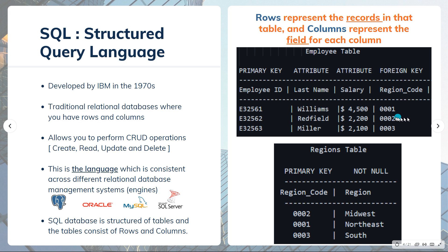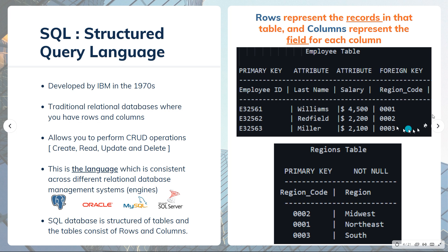A foreign key in one table might be the primary key in another table. We have codes 0001, 0002, 0003, which don't mean much to us on their own. To understand their meaning we refer to the regions table: 0002 means the Midwest region, 0001 means the Northeast, and 0003 means the South. A primary key ensures a row is not repeated, and a foreign key prevents actions that might destroy links between tables. This is why we call it a relational database.